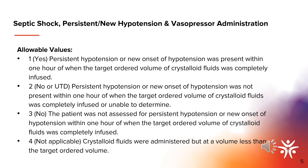Moving on to acceptable values that you would select when answering the question: was persistent hypotension or new onset of hypotension present within one hour of when the target ordered volume of crystalloid fluids was completely infused? Value one — yes, persistent hypotension or new onset of hypotension was present within one hour of when the target volume of crystalloid fluids was completely infused. Value two — no or unable to be determined: persistent hypotension or new onset of hypotension was not present within one hour of when the target ordered volume of crystalloid fluids was completely infused, or unable to determine.